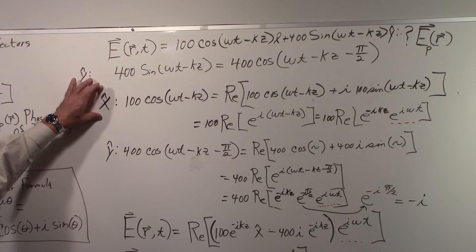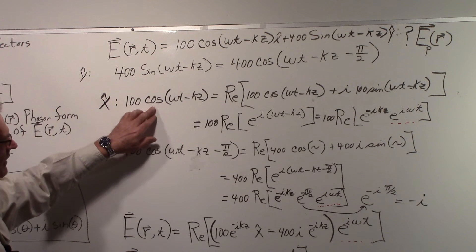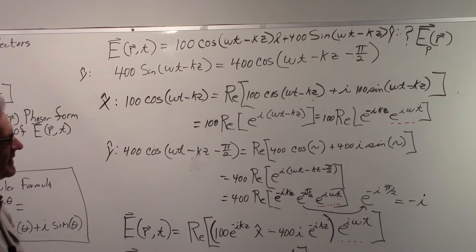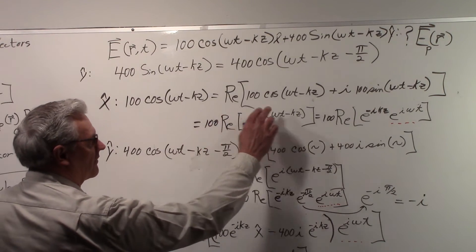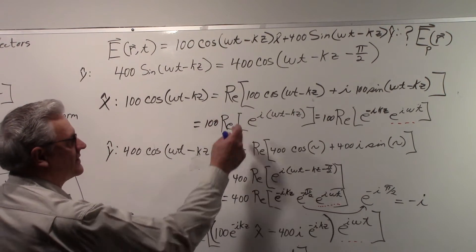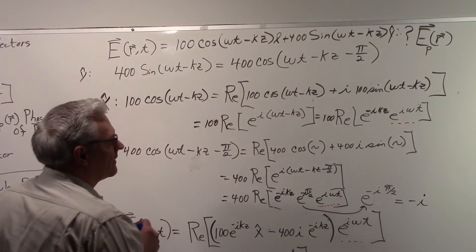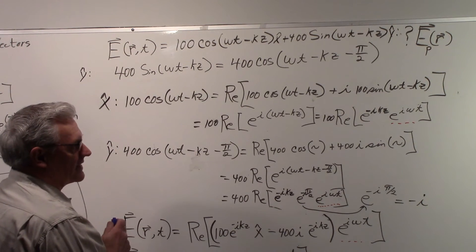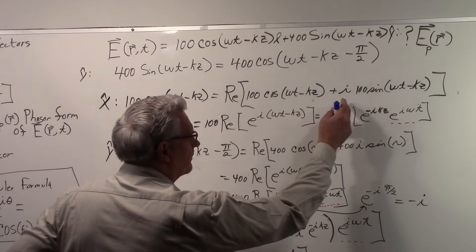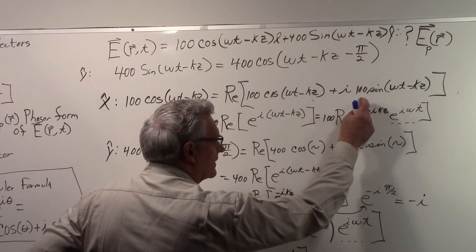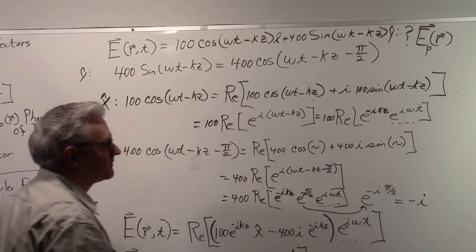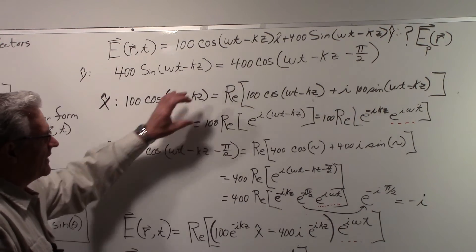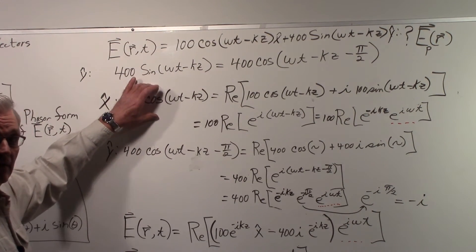So let's start with the x component. We have 100 times the cosine of omega t minus kz. Now we can easily write that as the real part of everything that's in these square brackets. It's the 100 cosine of omega t minus kz. And we can put in i times the 100 sine of omega t minus kz. Because when we take the real part of that, we get back what we had.